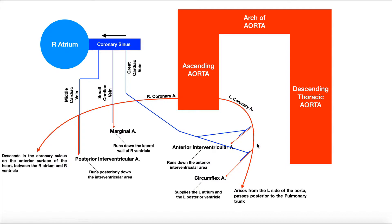The left coronary artery also gives off another branch called the circumflex artery. It's called the circumflex artery because it starts off mostly on the anterior surface of the heart but quickly courses around to the posterior surface, supplying the left atrium and also the left posterior ventricle. Since the left ventricle is very large, it gets blood not only from the anterior interventricular artery but also the circumflex artery on its posterior side, and from the artery of the left ventricle on the anterior side.